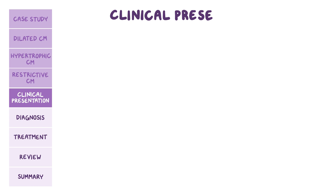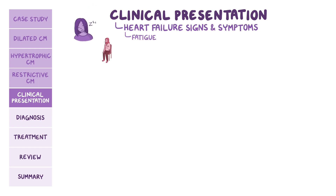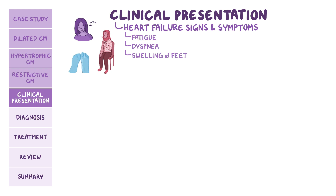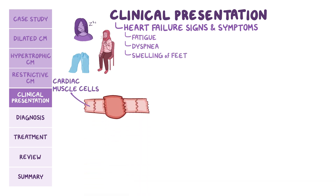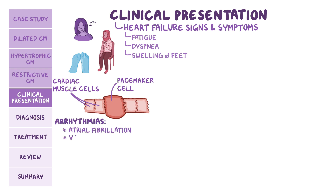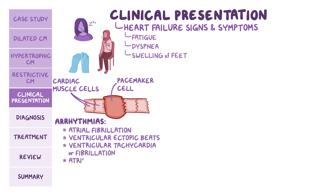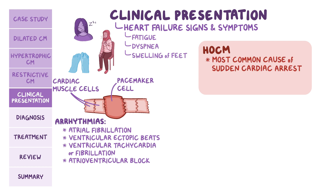Regarding clinical presentation, in all three types of cardiomyopathy, the heart may over time be unable to do its job effectively, leading to heart failure signs and symptoms like fatigue, dyspnea, and swelling of the feet. Because cardiomyopathies affect the cardiac muscle as well as the pacemaker cells running through it, they can lead to arrhythmias like atrial fibrillation, ventricular ectopic beats, ventricular tachycardia or fibrillation, and atrioventricular block. Importantly, hypertrophic obstructive cardiomyopathy is the most common cause of sudden cardiac death in people under 35, and is especially common in athletes due to the development of ventricular arrhythmias.